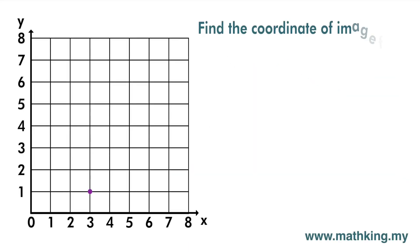Find the coordinate of the image for point P (3, 1) with translation (2, 6). Translation is 2 units to the right and 6 units up, and the image P' coordinate is (5, 7).